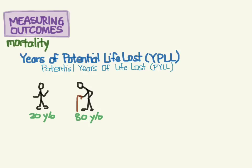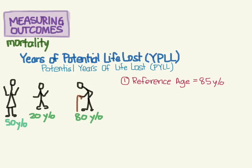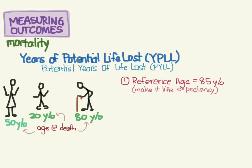The first thing you have to do is set an upper reference age. For this example, let's set that at 85 years, though I've seen it listed as 65 or even 75. We have one person dying at 80, another dying at 50, and another dying at 20.